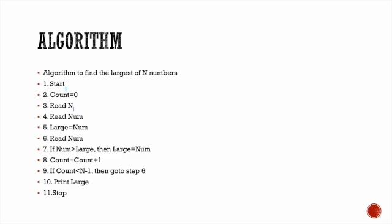Start. Count is initially equal to 0. Then read n, which equals 3. Then read the first number, which is 1. Assign large equal to the first number, so large equals 1. Now let's compare the next number.